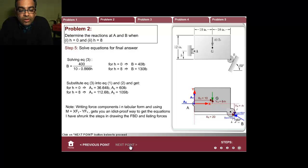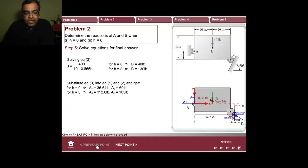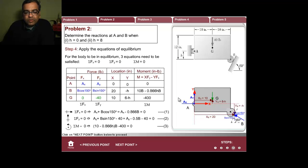The whole idea is that if you write the force components in tabular form, and if you use mx equal to xfy minus yfx, you'll get an idiot-proof way of doing the equations. It's very difficult for you to go wrong in this method. The critical point here is getting this force table. Once you get this thing, writing out the equation is no big deal. Converting this picture into this force table is where really your talent lies. Please learn how to do that.